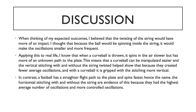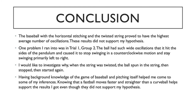We also know that a fastball has more of a straighter path to the plate and it spins faster, and this was proved with the horizontal stitching both with and without the string being twisted, because they had the highest average number of oscillations and they were more controlled oscillations. The results of this experiment did not support my hypothesis because the baseball with the horizontal stitching and the twisted string had the highest number of oscillations.